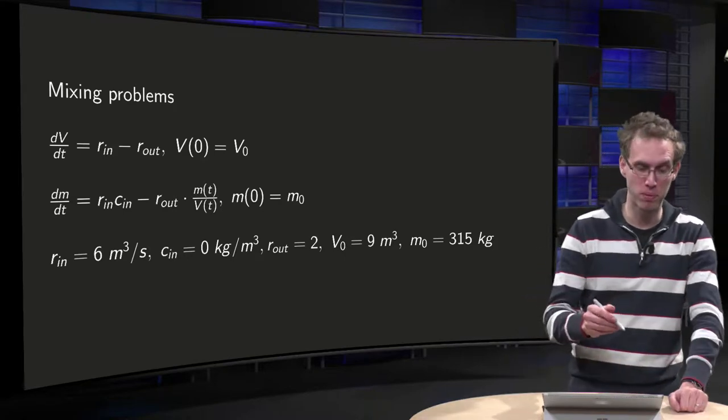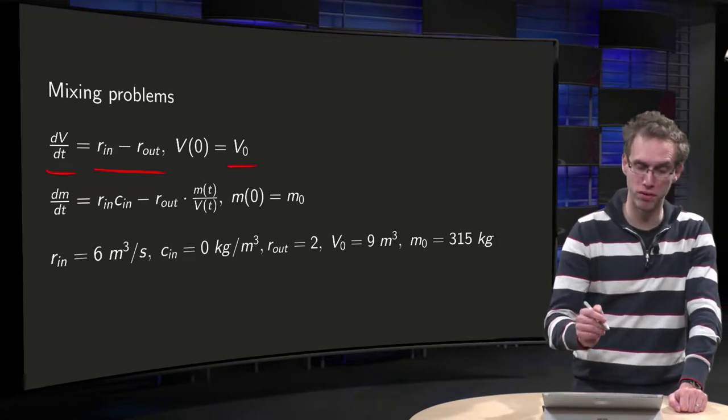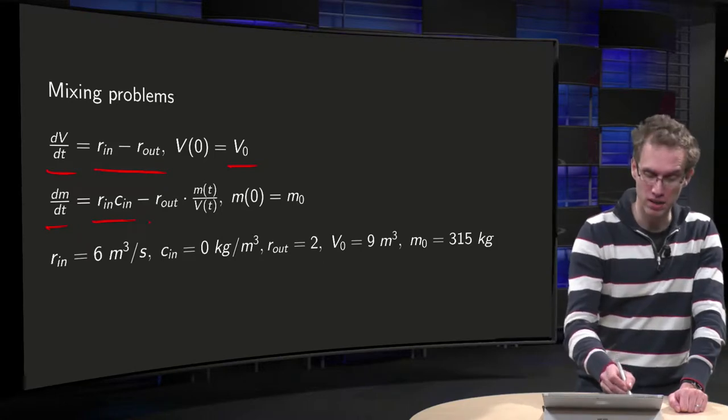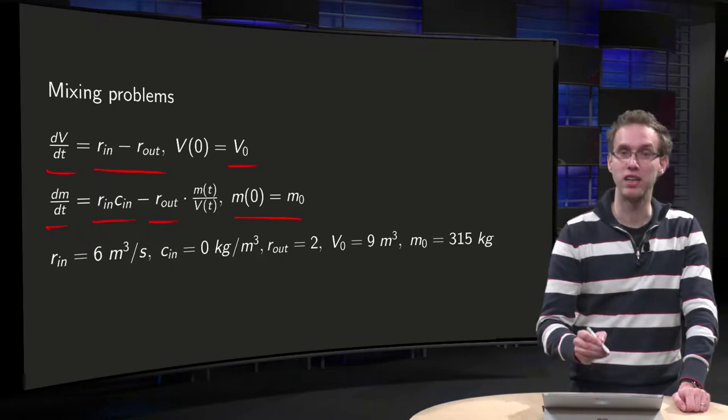Let's just repeat our mixing problem. We had dV/dt equals rate in minus rate out, and some given initial volume, and dm/dt equals rate in times c_in, minus rate out times c_out, which equals m over V, with some given initial mass.